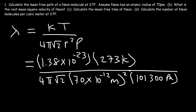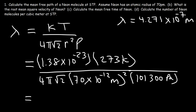Go ahead and plug in everything and get the answer for part A. The mean free path is 4.271 times 10 to the minus 7 meters. That's the answer for the first part of the problem.